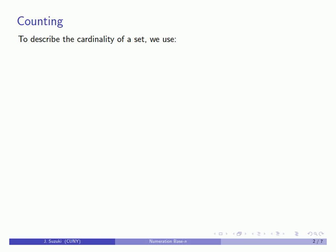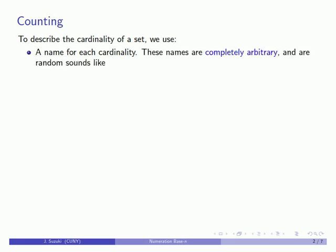First of all, to describe the cardinality of a set we need to have a name for each cardinality, and it's important to understand that these names are completely arbitrary. They are random sounds like scorch, glebe, nirm, glup glup.